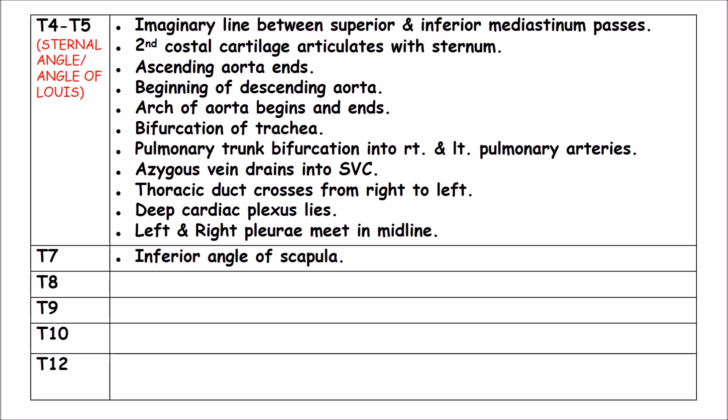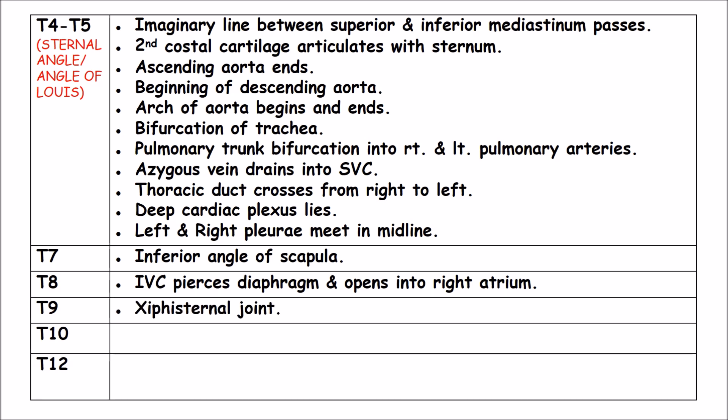T7: The inferior angle of the scapula. T8: The inferior vena cava pierces the diaphragm and opens into the right atrium. T9: The xiphisternal joint. T10: The esophagus pierces the diaphragm.